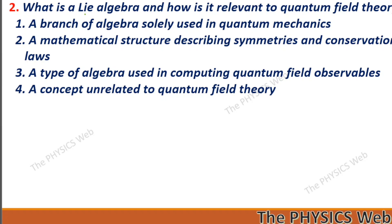Next: what is a Lie algebra and how is it relevant to quantum field theory? It is the mathematical structure describing symmetries and conservation laws. So, two is your correct option.